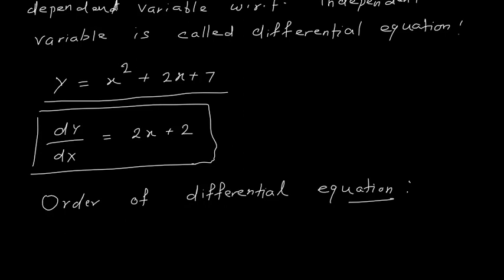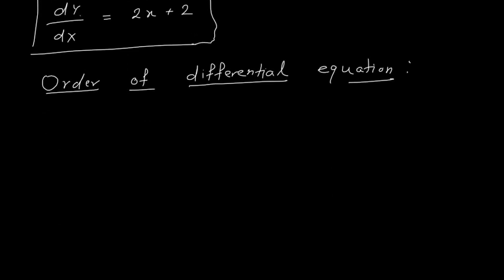That definition seems a little confusing. In the above example (equation 1), dy/dx = 2x + 2 is order 1. If I differentiate again, I get d²y/dx² = 2, which is equation 2 — a differential equation of order 2. So the number of times I differentiate a particular equation is the order of that differential equation.